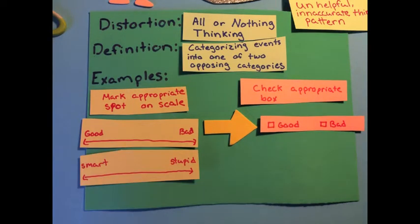Do the same thing for smart versus stupid. Most people, most things, are more intelligent in some areas than in others, and would fall somewhere in the middle of that spectrum.